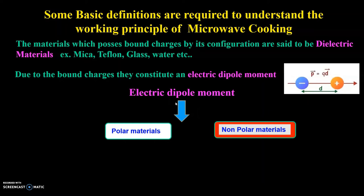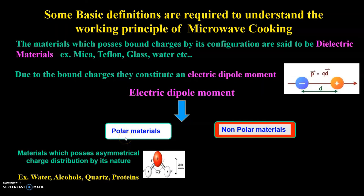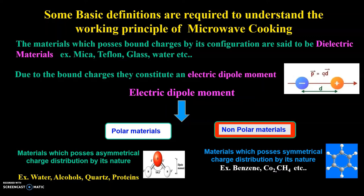Based on the electric dipole moment, materials can be classified into polar materials and non-polar materials. Polar materials possess an asymmetrical charge distribution by their nature. Examples include water molecules (which are asymmetrical), alcohols, lipids, and proteins. Non-polar materials exhibit a symmetrical structure. Examples include benzene (symmetrical), CO2 (linear structure), CH4, and oils. These come under non-polar materials.